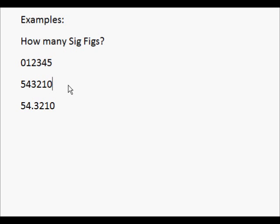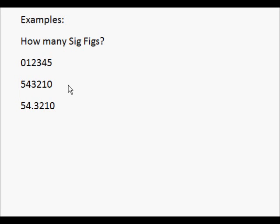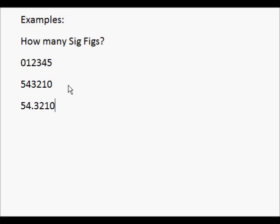What about this one? This one has a decimal point, so all the digits are significant: 1, 2, 3, 4, 5, 6 — six significant figures.